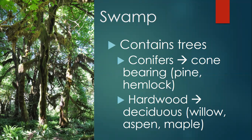Swamps can be year-round water or not. Swamps can also have two types of trees — they can have deciduous trees such as willows, aspens, and maples, but they can also have conifers like pines and hemlocks.